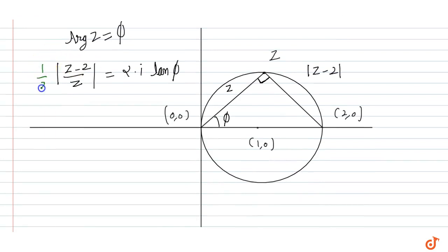1 by 2. Modulus of z minus 2 upon z, z minus 2 is equal to z tan phi. So z tan phi upon 2 is equal to alpha into iota, modulus of z. This value is equal to alpha tan phi.